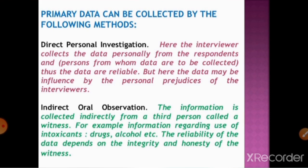In indirect oral observations, the information is collected indirectly from a third person, called a witness. This mostly takes place in cases of police investigations — through the witness, they collect the data. An example is information regarding the use of intoxicants such as drugs and alcohol. The reliability of the data depends upon the person providing the information, so the witness should be an honest person.